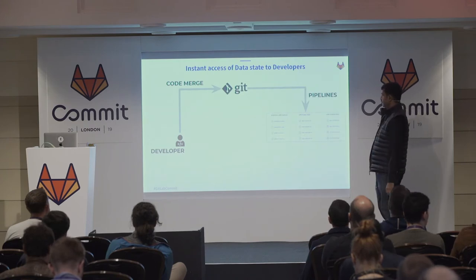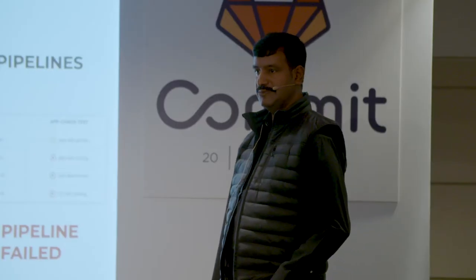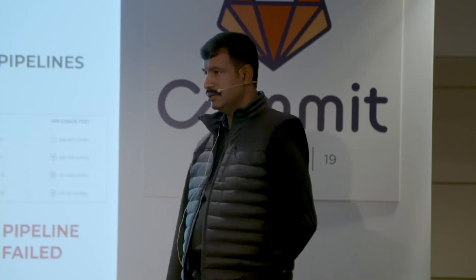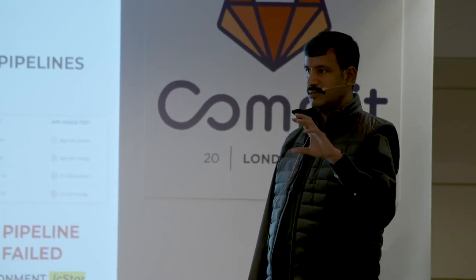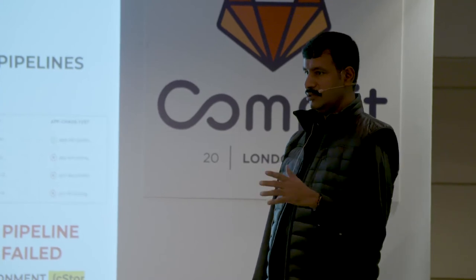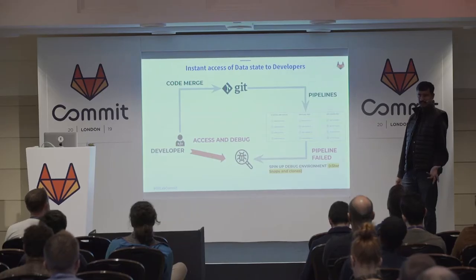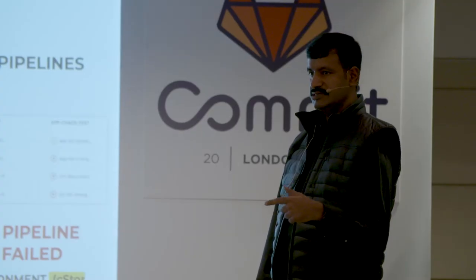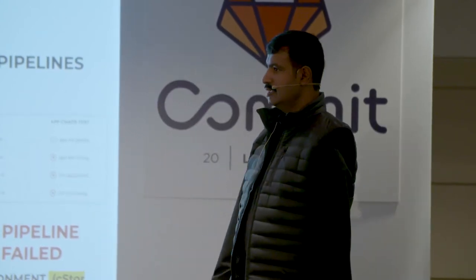The second problem is: as a developer, I merge my code and then it fails — not very common, but it does happen, and that's why we do CI. When I see a failure in the pipeline, I want to get access to the data. If you're using OpenEBS as storage for your stateful applications in the pipeline, you can just call the snapshot API — it's very easy to call this API from your GitLab CI YAML — and then you snap it, clone it, and give it to the developer. We use this for our own SaaS platform, and there were instances where you think it's a big problem, but it's just a null check that failed. You go ahead, fix it immediately, and the code gets merged an hour later.